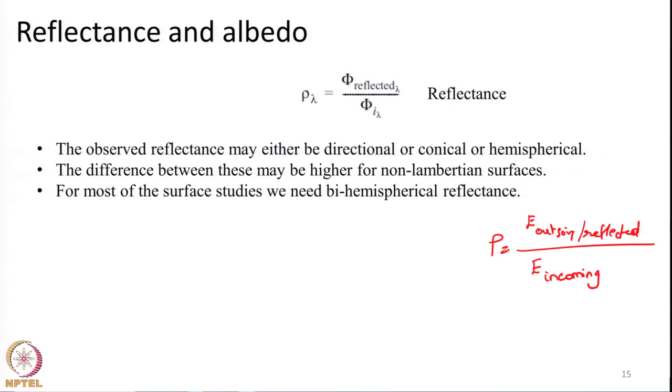The first basic definition of reflectance involves directional measurements — that is, measurements made using remote sensing sensors from only one particular direction. The sensor can be located here, exactly overhead of the object, or in different directions integrating over the conical solid angle it subtends on the earth surface. This is the directional component, and this is what we normally measure. For applications related to land surface modeling, snow studies, and energy balance studies, we do not need this directional component, but we need to measure the total energy reflected by an object within the entire hemisphere surrounding it. This means our sensor should not be looking from one direction but should collect energy within the entire hemisphere — which is practically not possible, especially from satellites.